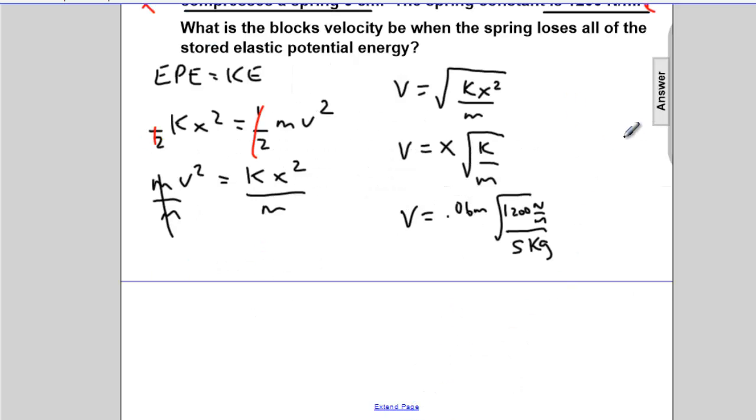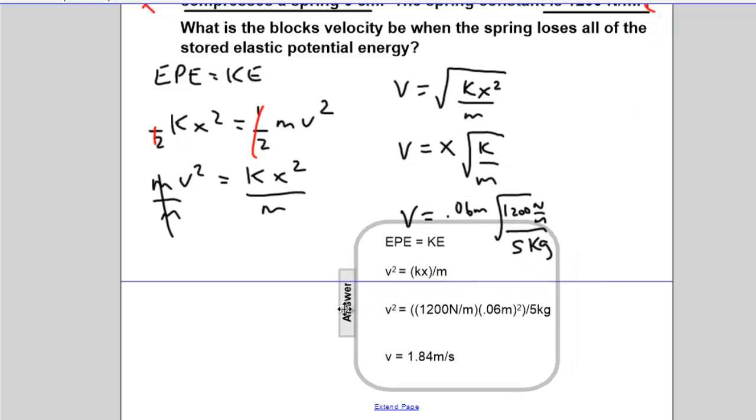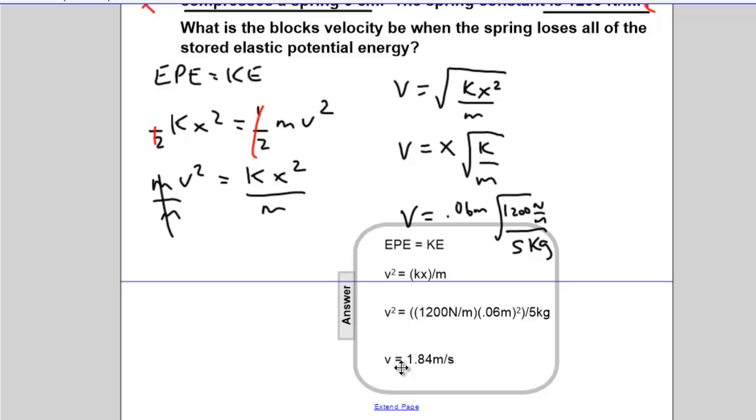So if we reveal the answer to this, save us from doing the math, we'll get 0.06 times the square root of 1,200 divided by 5. It will come out at 1.84 meters per second. Again, where we do not perform the computations, press pause, grab a calculator, show that the answers or show that the solutions will work out to the answers. It will help you gain confidence in your problem solving. That's a good thing.